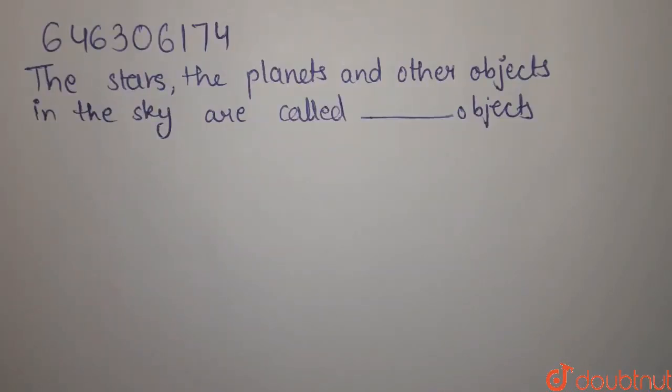Our question is: the stars, the planets and other objects in the sky are called dash objects.